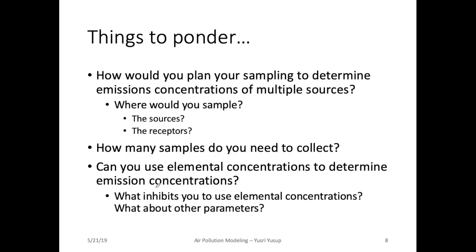If you place your sampler in a sensitive receptor location, it might not capture all of the different sources contributing to that area, so your results might not accurately reflect the emission concentrations of the sources. You also need to think about how many samples to collect — by sampling just once you may determine an emission concentration, but these values vary. Collect as many samples as you can to see patterns in the data and be fairly certain that the emission concentrations you calculated are representative of the average from the sources.